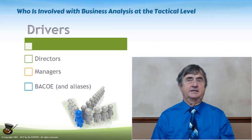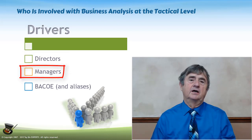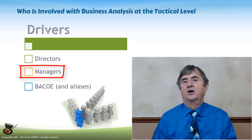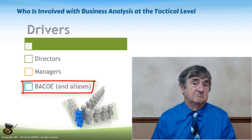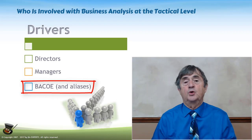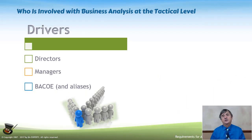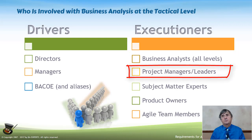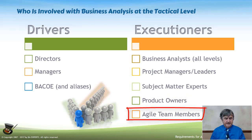So who are the players involved in tactical business analysis? At this level, the common drivers of the process are directors, managers, product managers, and product owners — people who have decision-making authority at the operational level, able to decide things that will have a direct impact on the people doing the real jobs. People executing tactical business analysis are going to be business analysts at all levels, product managers, project leaders, project managers, and subject matter experts. Product owners on an agile team will definitely be involved, as well as agile team members.